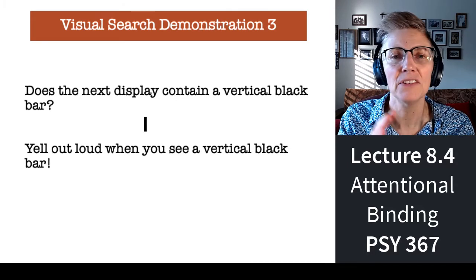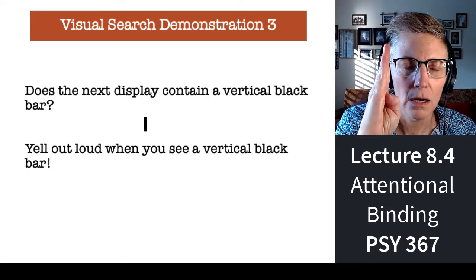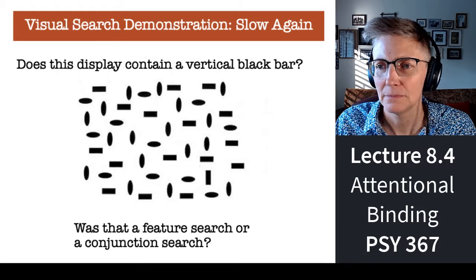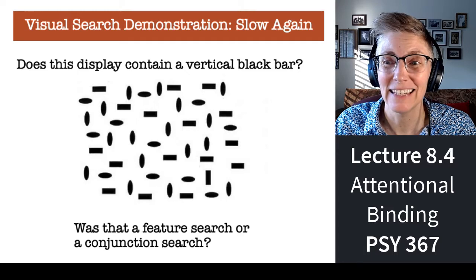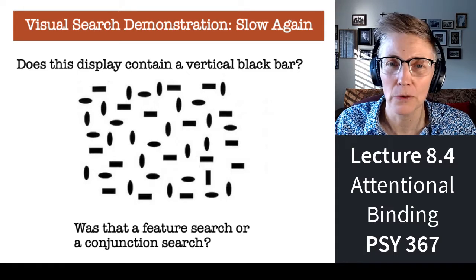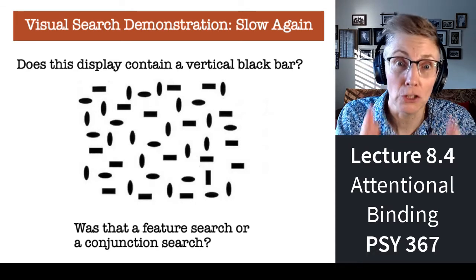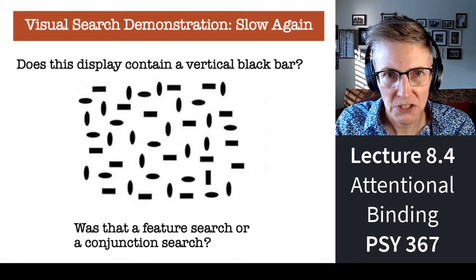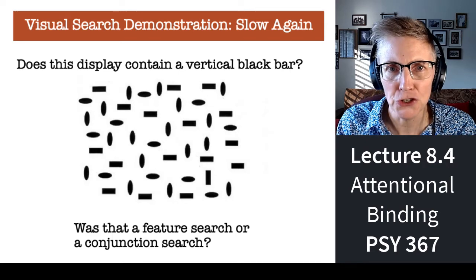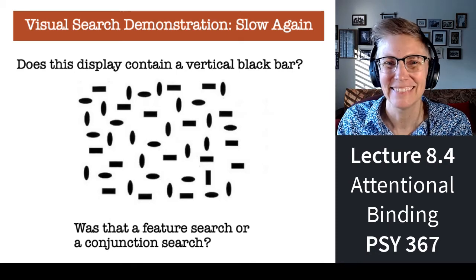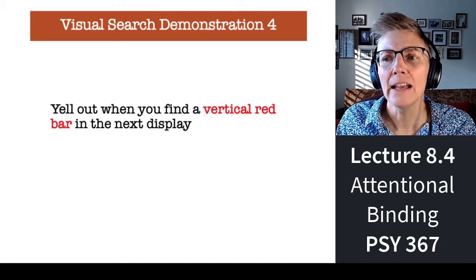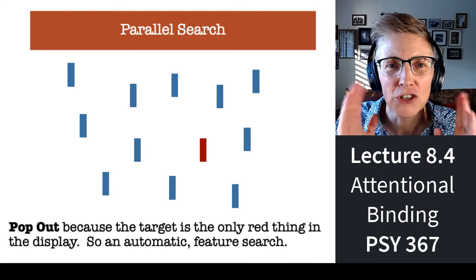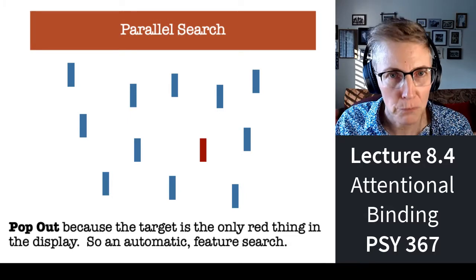Tell me if this next display contains a vertical black line segment — a black vertical bar. Took a little longer, didn't it? Because you can't just look for vertical things and you can't just look for black things — you have to combine the two. That was a conjunctive search. Now: yell out when you see a vertical red bar. Easy! What is this search? It's a feature search, because the individual feature that makes it different from everything else in the display pops right out. Pre-attentive processing — doesn't need attention.